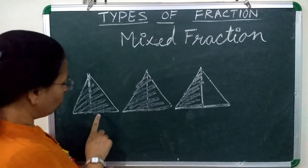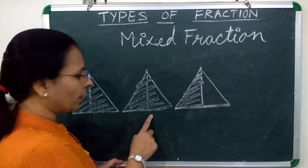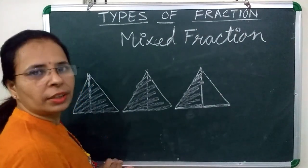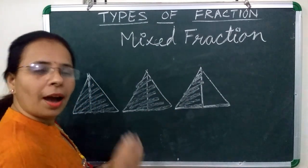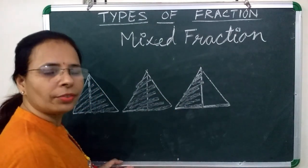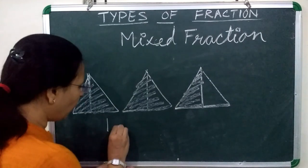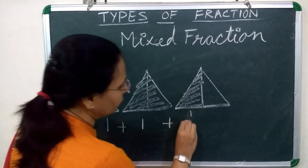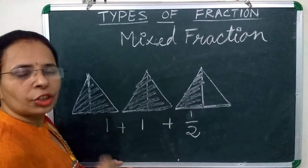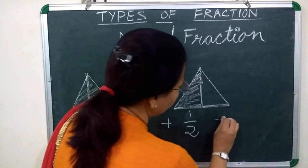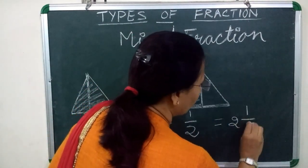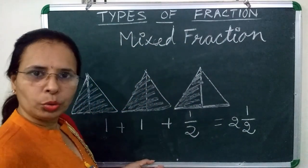Children, 2 triangles are completely shaded and 3rd triangle is half shaded and half is unshadowed. When we added these shaded parts, we get 2 whole, 1 upon 2.